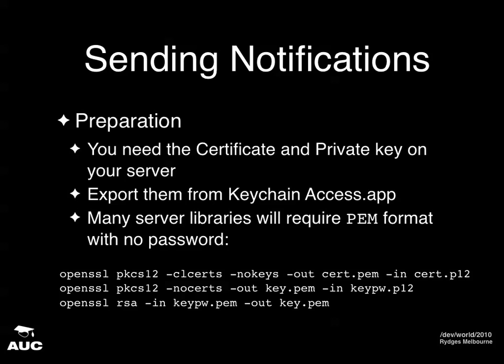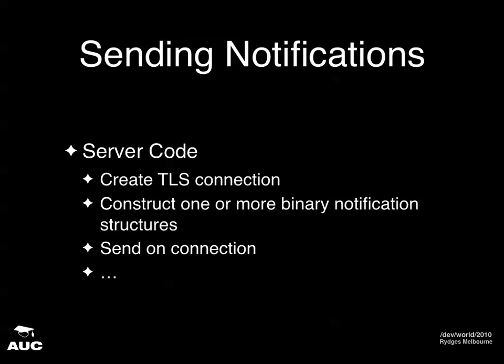High-level overview of sending a notification from server code: we create a TLS connection — Transport Layer Security, essentially the next version of SSL — creating an encrypted tunnel with Apple. We construct one or more of those binary notification packets, then send them down the socket and repeat. We're going to cover two fundamentally different ways to do this: using a Perl module, and using PyAPNS — a Python server you can use as a proxy.